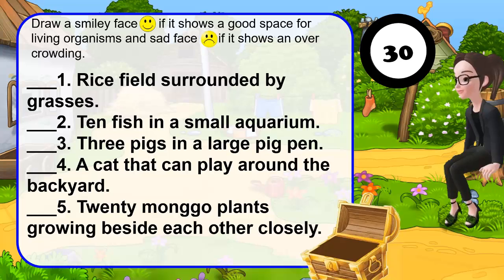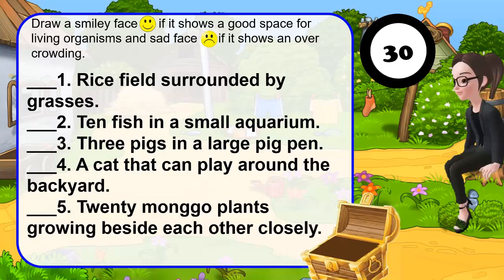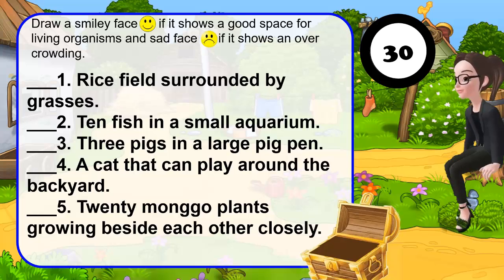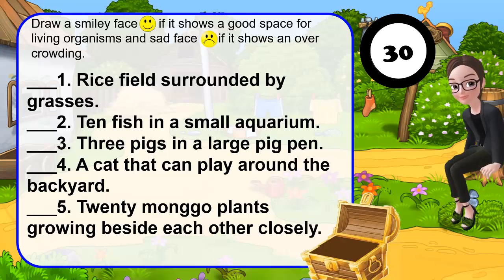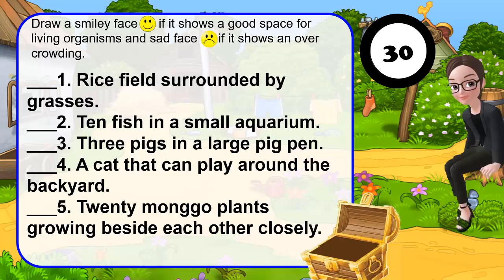1. Rice fields surrounded by grasses. 2. Ten fish in a small aquarium. 3. Three pigs in a large pig pen. 4. A cat that can play around the backyard. 5. Twenty mongo plants growing beside each other closely. You have 30 seconds to answer this.